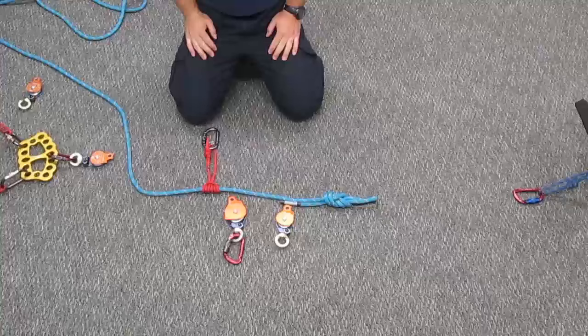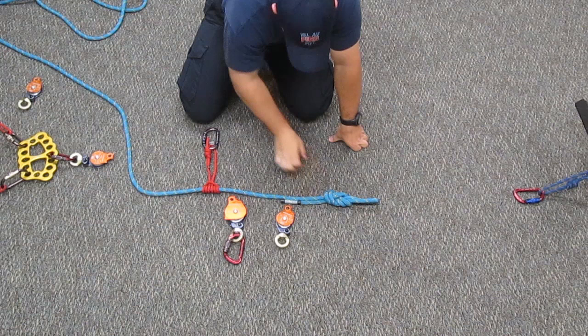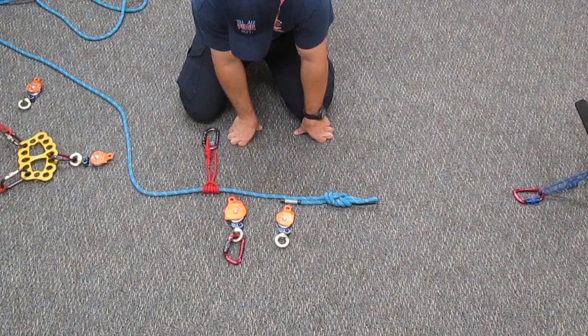A 3 to 1 mechanical advantage is an odd mechanical advantage, so therefore the rope will terminate at the load. First thing you want to do is create a termination knot so that you can terminate it at the load.